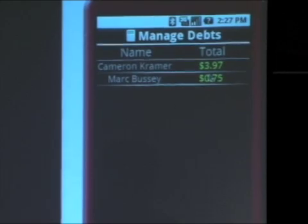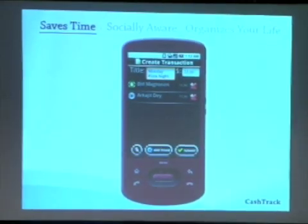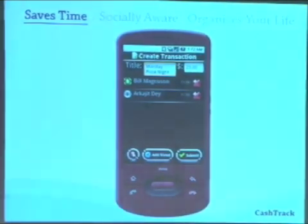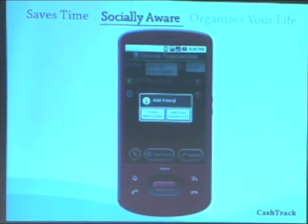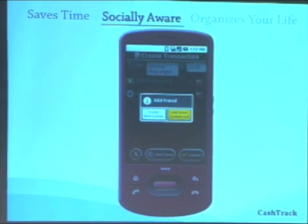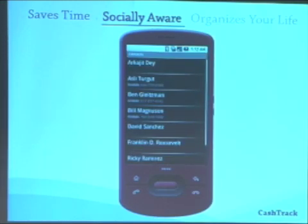Bill is going to tell you more about the CashTrack application. Ben showed you how CashTrack helped make the day at the ball game a resounding success. But how does CashTrack integrate into your daily life? First, it saves you time. When you go out for dinner and want to put the transaction into CashTrack, it only takes a few clicks to get everyone listed and submit it so everyone can see it later — it's permanently saved when you hit submit. Next, CashTrack is socially aware. When adding friends to transactions, we don't need a separate list of CashTrack users — we simply use our phone's contact list, which pulls up everyone in our phone book, making it easy to select people and add them to transactions.